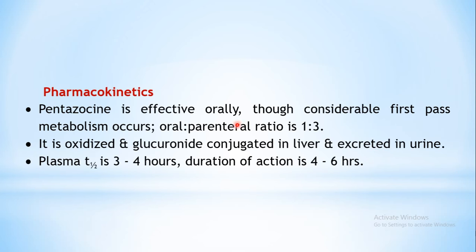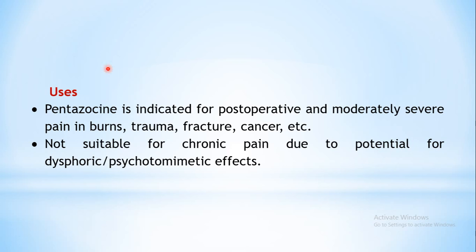Regarding pharmacokinetics of pentazocine, it is effective orally - another difference from morphine, which has poor oral bioavailability due to high first-pass metabolism. Pentazocine also has first-pass metabolism but comparatively better oral-to-parenteral ratio of 1:3. It is metabolized in the liver by oxidation and glucuronide conjugation, and metabolites are excreted in urine. The plasma half-life is three to four hours and duration of action after a single dose lasts four to six hours. It is used for post-operative or moderately severe pain in burns, trauma, fractures, and cancer, but should not be used where prolonged treatment is required.